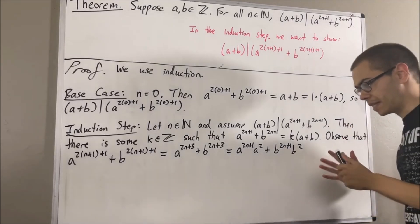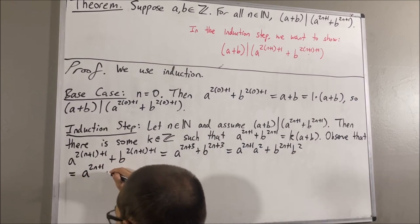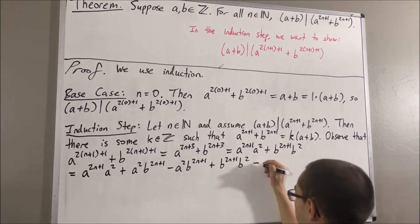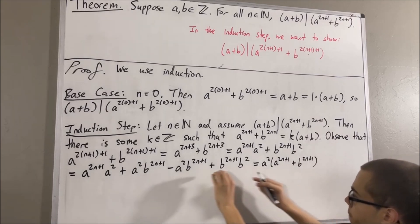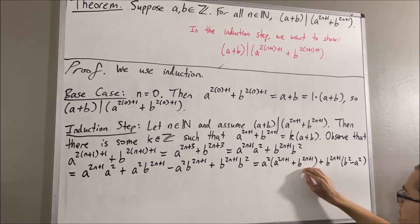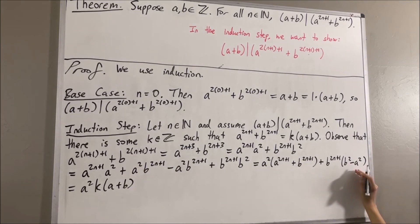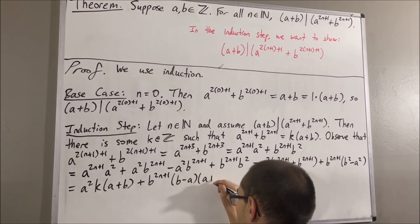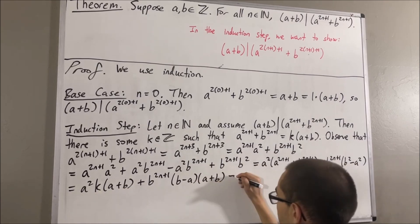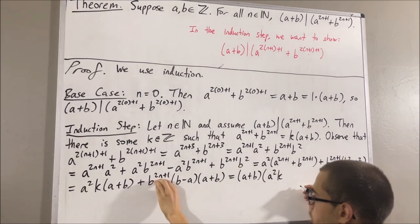This is probably the least obvious part of the proof. We add and subtract A squared times B to the 2n plus 1. From the first two terms we factor out A squared, and from the last two terms we factor out B to the 2n plus 1. We use the inductive hypothesis — A to the 2n plus 1 plus B to the 2n plus 1 equals K times A plus B — and the difference of squares: B squared minus A squared equals B minus A times B plus A. Both resulting terms contain A plus B, so we factor it out, giving A squared K plus B to the 2n plus 1 times B minus A.